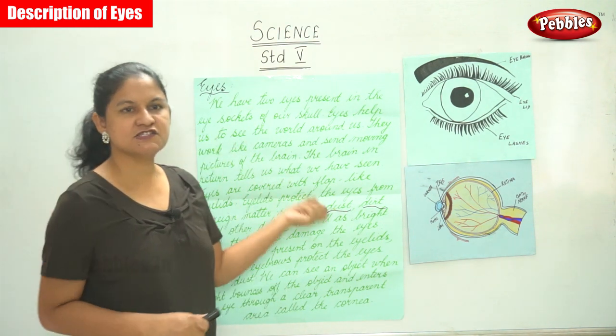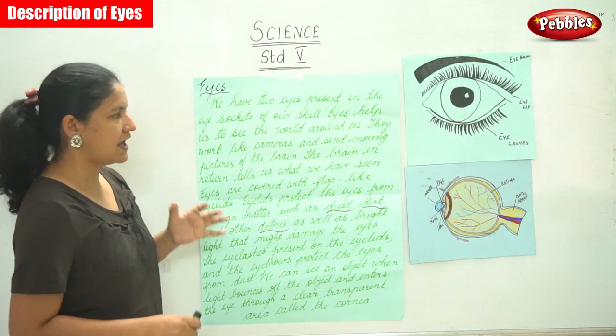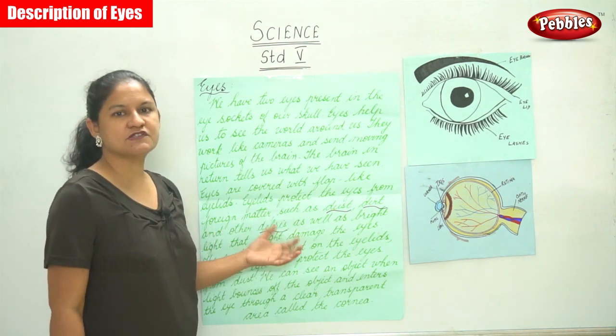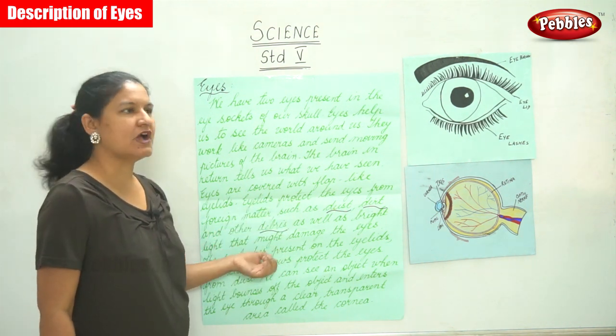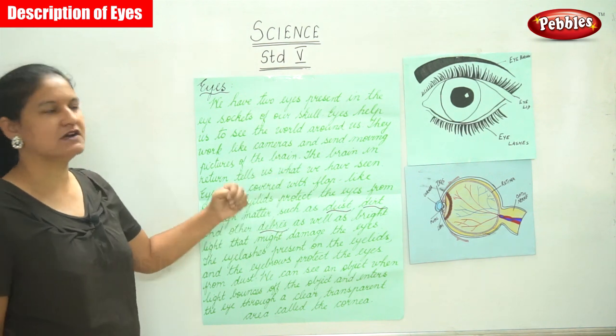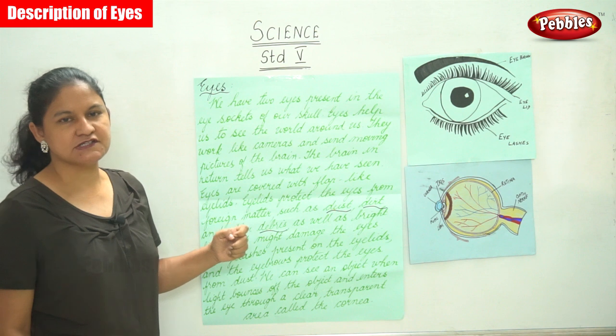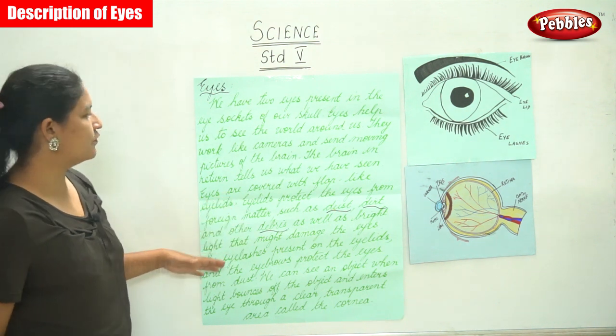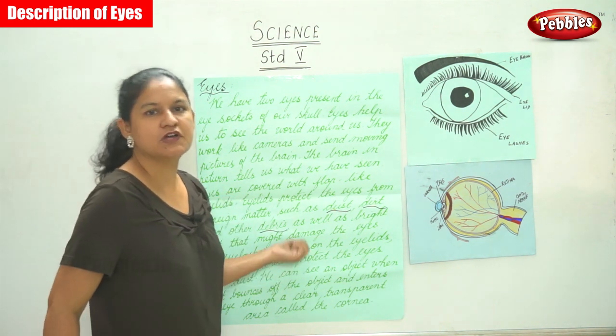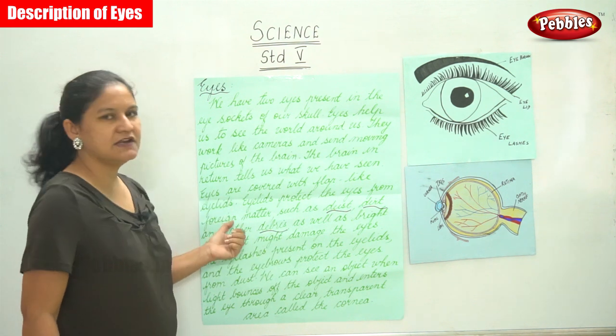It is because of the eyes that we are able to see the world around us. They work like cameras and send moving pictures to the brain. The brain in return tells us what we have seen.